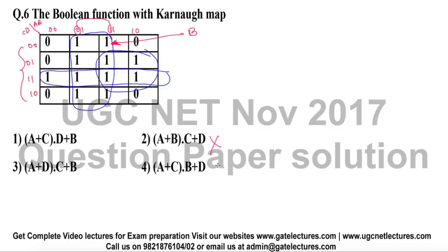We can directly neglect the two options. Next, looking at this sub-cube — what is it representing? In this sub-cube, what are the terms that are not changing? A is not changing, and the next term that is not changing is D. So D is also not changing, and we have AD represented by this particular sub-cube.